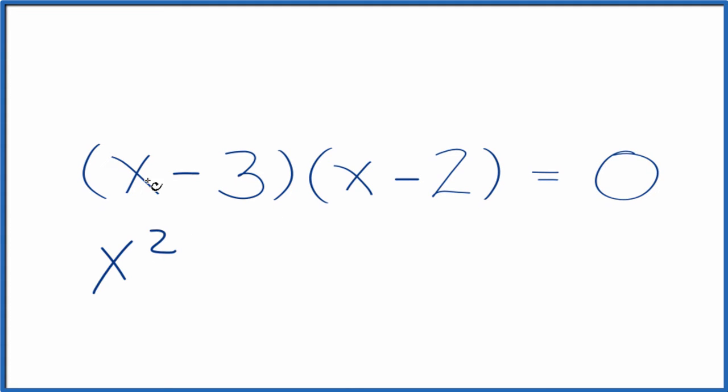that's x squared, we have x times negative 2, that's negative 2x, then negative 3 times x is negative 3x, negative 3 times negative 2, that's positive 6,